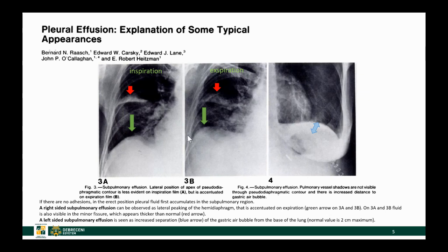On the left-hand side, it's a little bit easier to pick up, because normally there is a distance between the gastric air bubble and the left hemidiaphragm. Now, if there is some fluid accumulating below the lung and in between the diaphragm, then that distance will increase accordingly — and that you can see if you have seen enough normal chest X-rays.